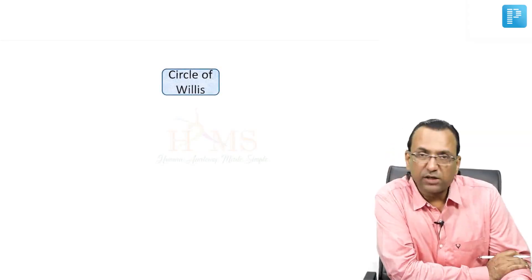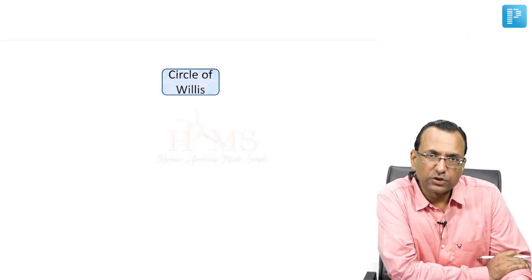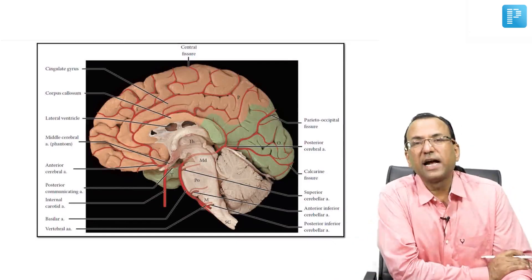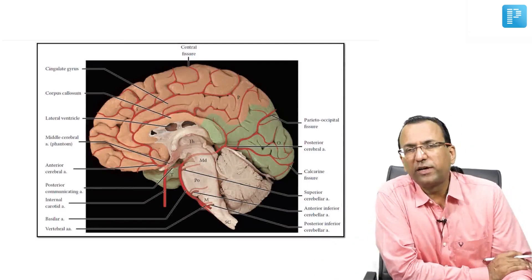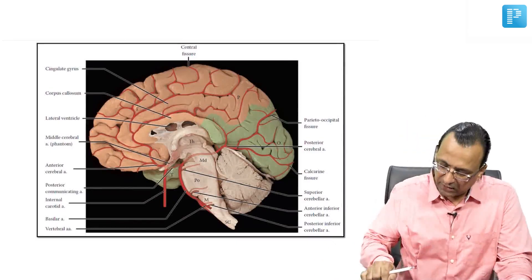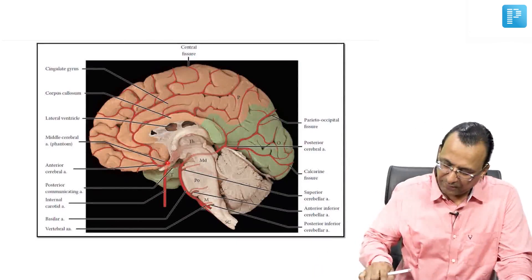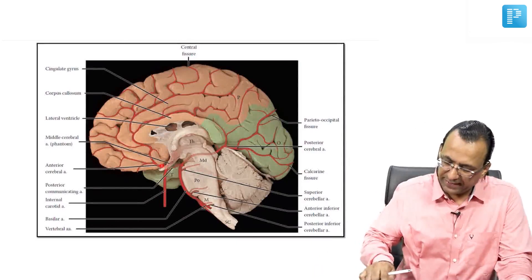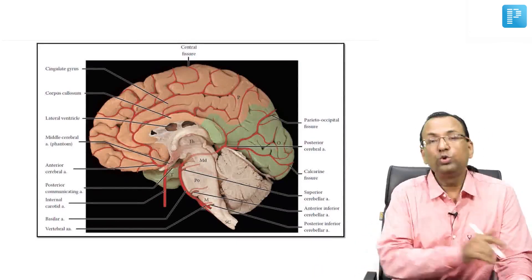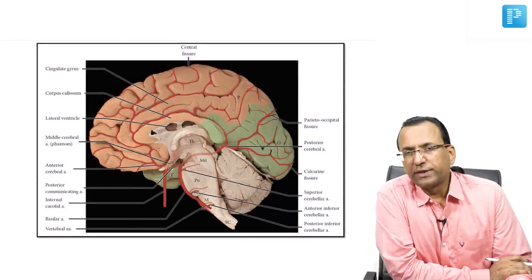Now look at the details of the Circle of Willis. The Circle of Willis is at the base of the brain, and it is contributed by two arteries.